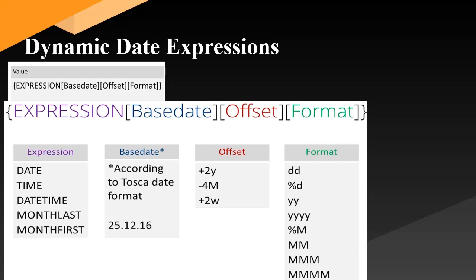There are multiple expression formats available in Tosca. The first expression is DATE, which returns the date. The second is TIME, which returns the time. Next is DATETIME, which returns date and time. Then MONTHLAST, which returns the last day of the month, and MONTHFIRST, which returns the first day of the month.